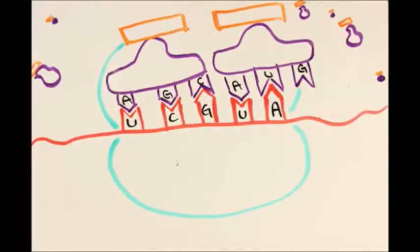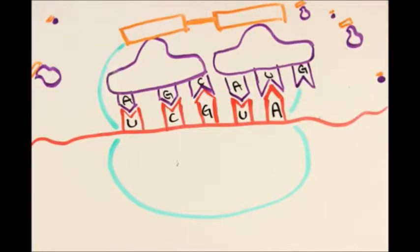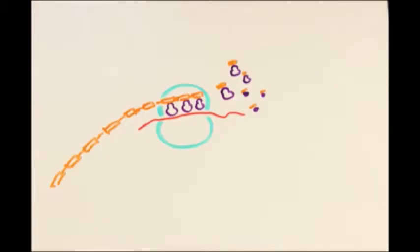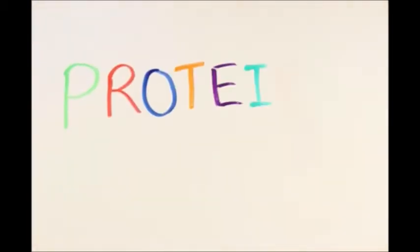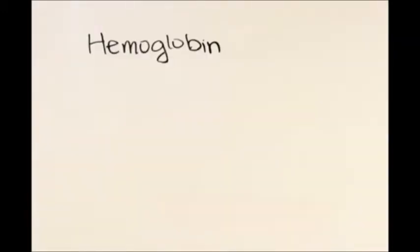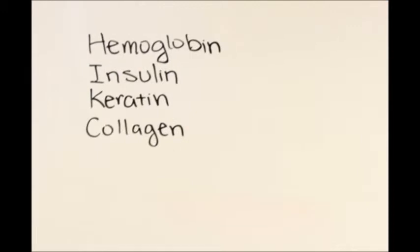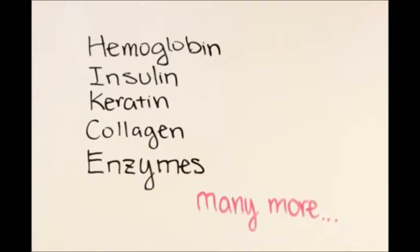Or as some people call it, codons. Now, once a tRNA is attached to a mRNA, the amino acid will be attached to the neighboring amino acid, and a strand of amino acids forms protein. And here's some examples of proteins. I hope you liked this video.